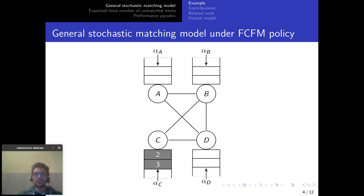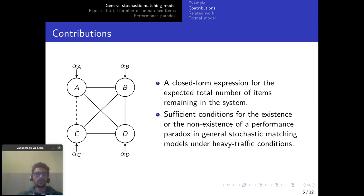So our objective in this kind of model is to evaluate the performance which is measured by the expected total number of items remaining in the system. And we are interested in how this performance will evolve if we add an edge to the system. So here for example if we add an edge between the node A and C, how will the performance evolve?